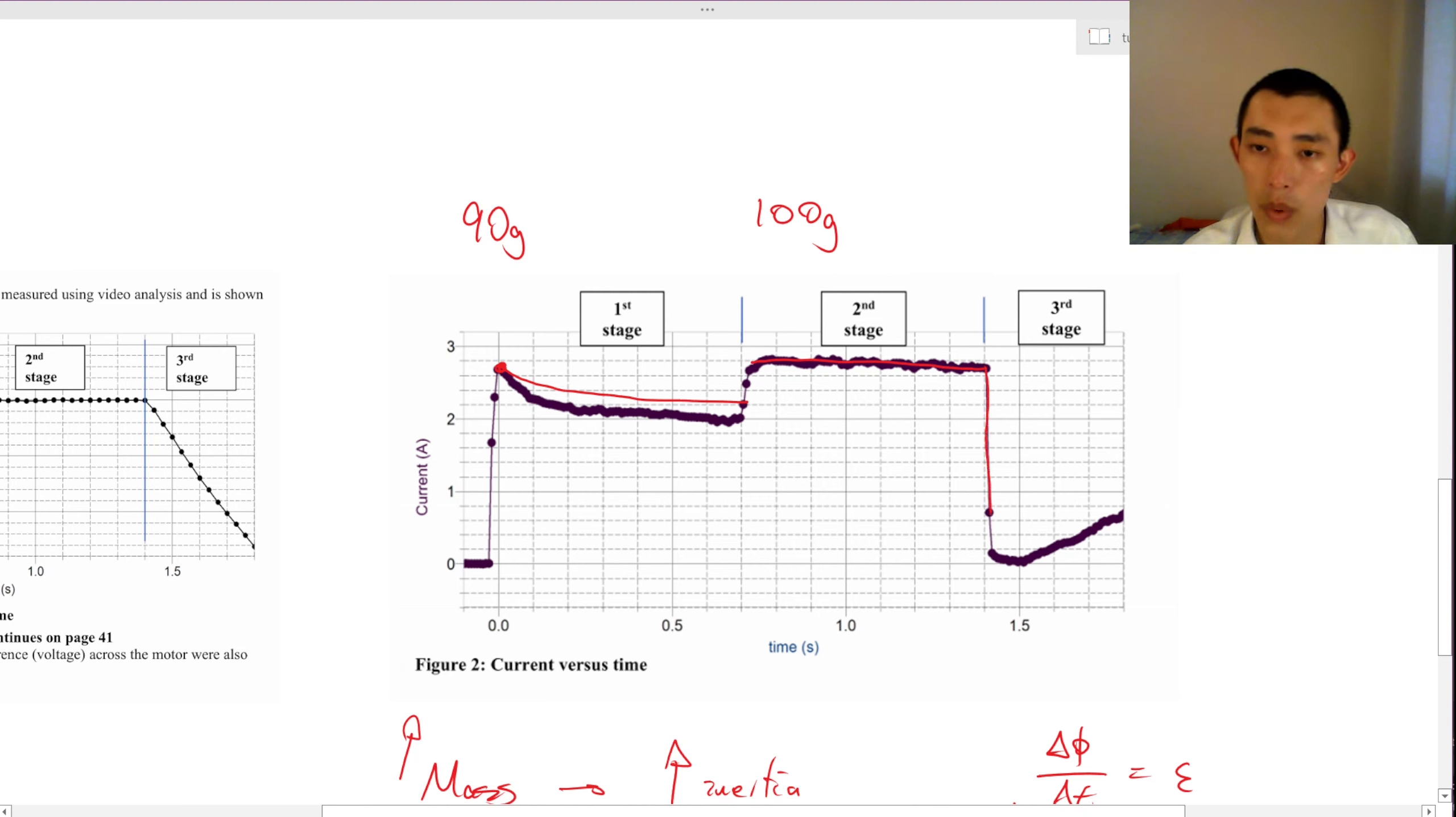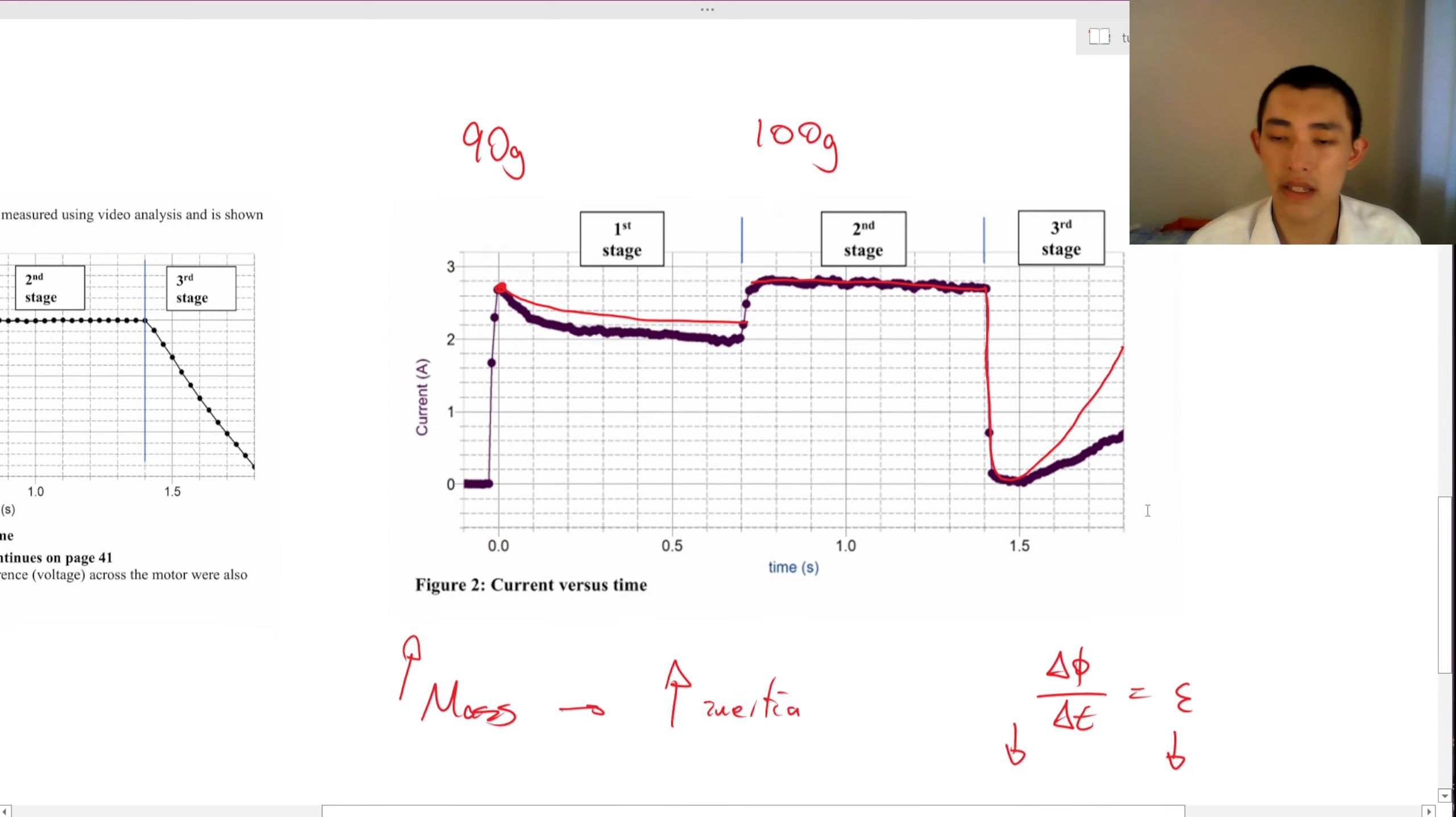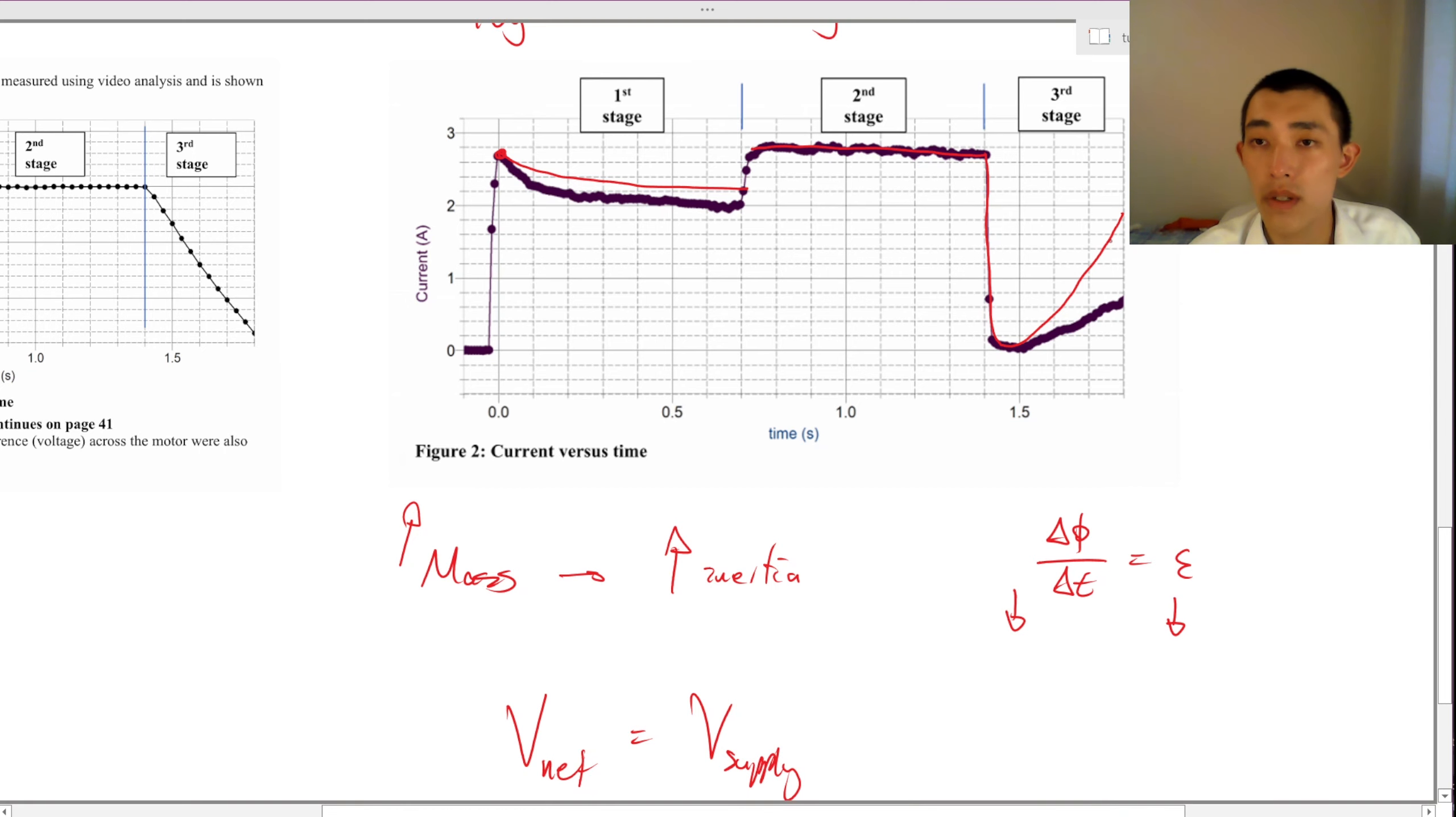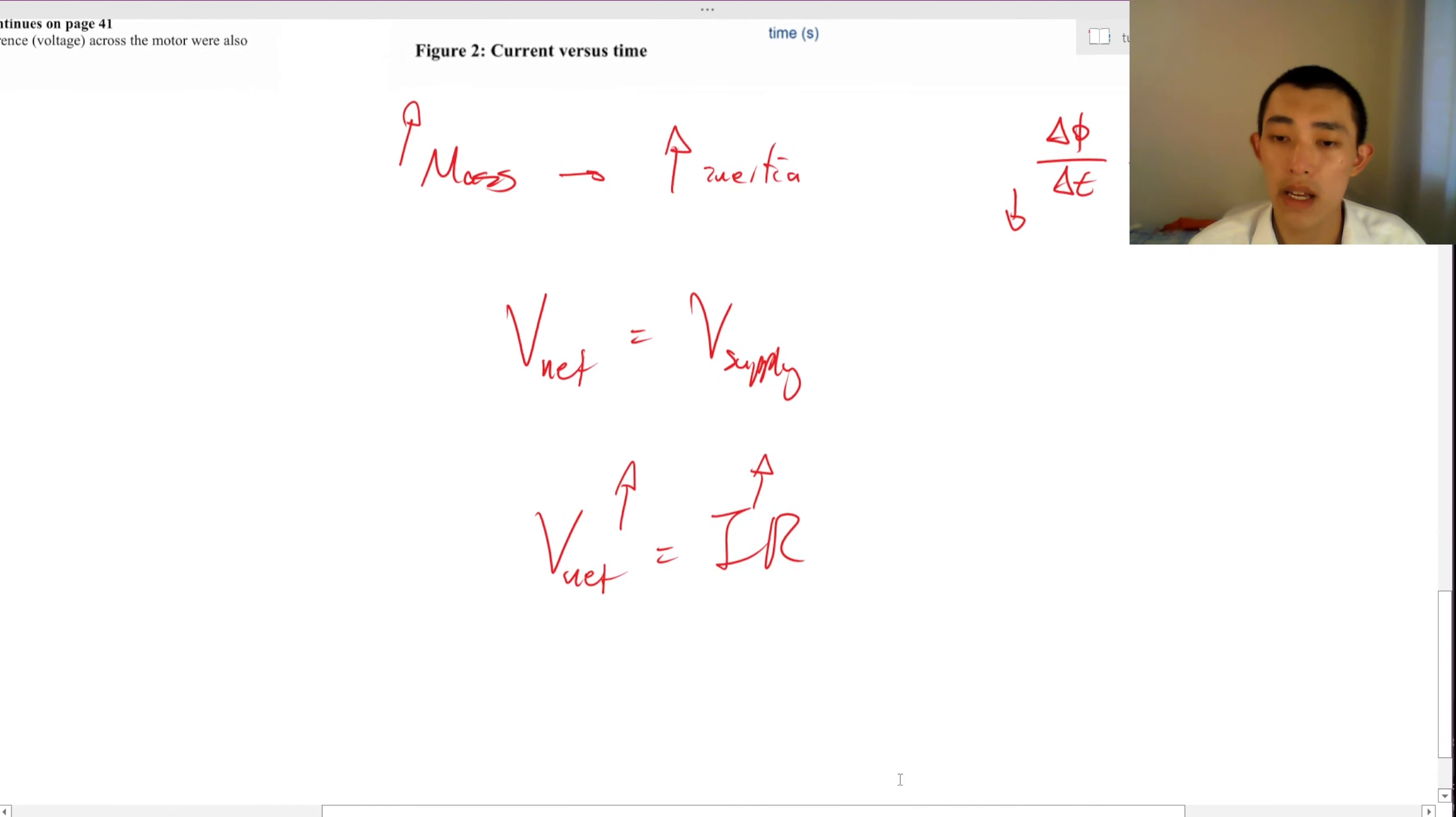In the third stage, we would expect that the voltage increases. Probably not that extreme, but as an example. The reason for that is because it's going to create a larger current and a larger voltage. And why is that?